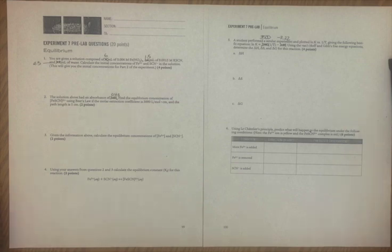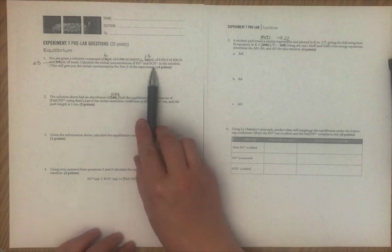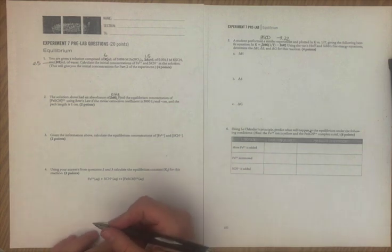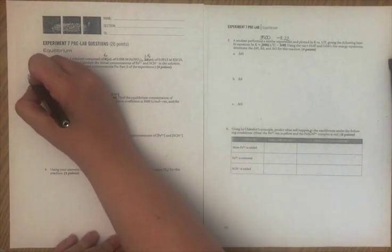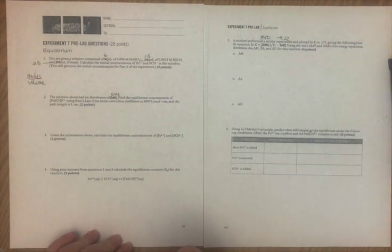To begin, we're asked to find the initial concentrations of Fe³⁺ and SCN⁻, or iron 3 and thiocyanate ions in the solution. In order to find the concentration, all we need to do is figure out the moles divided by the volume.